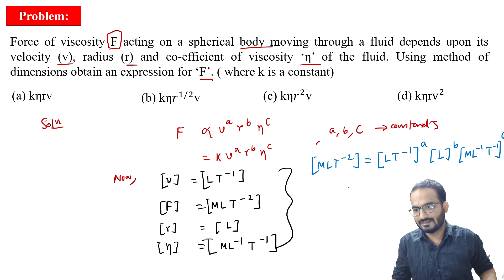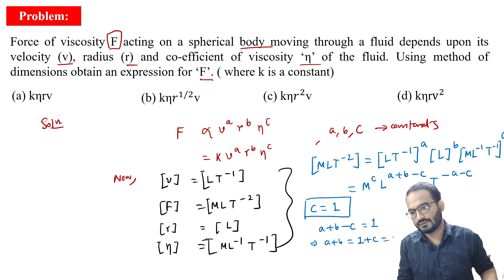If you gather the coefficients of M, L, and T, you get M^C, L^(A+B-C), T^(-A-C). Now if you equate the dimension on both sides, you see M^1 is there, so C equals 1. And A+B-C equals 1. Since C equals 1, it means A+B equals 2.